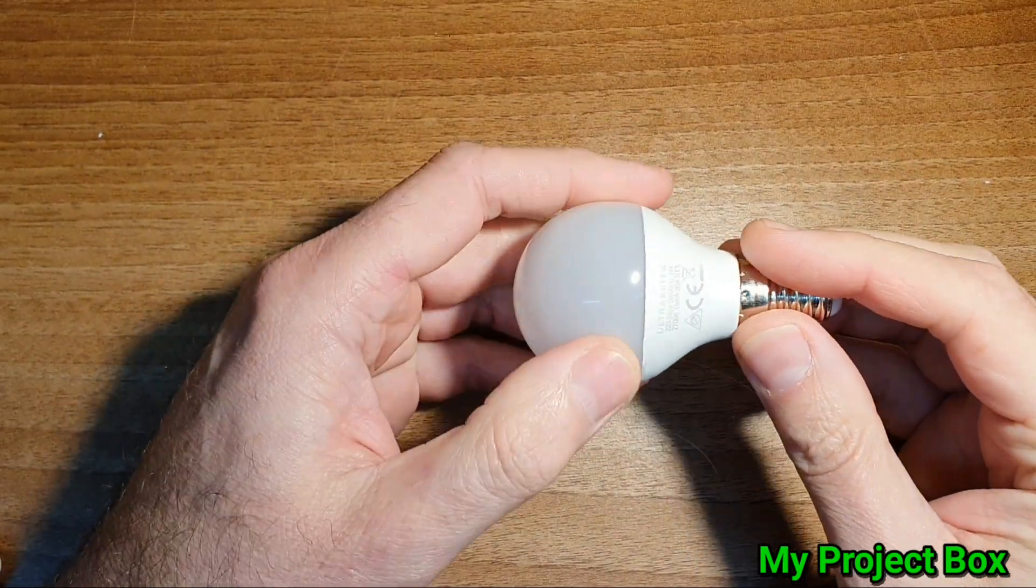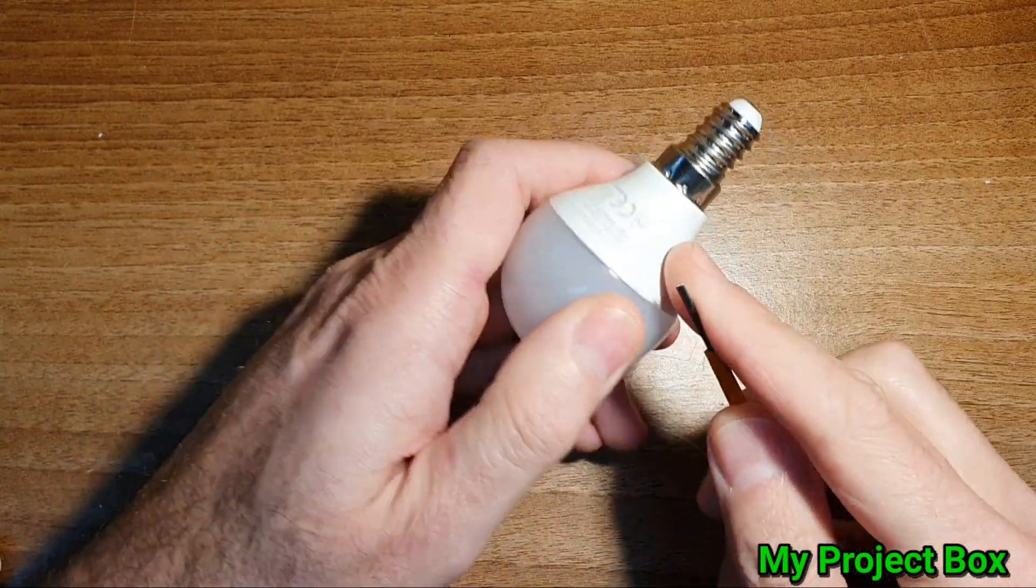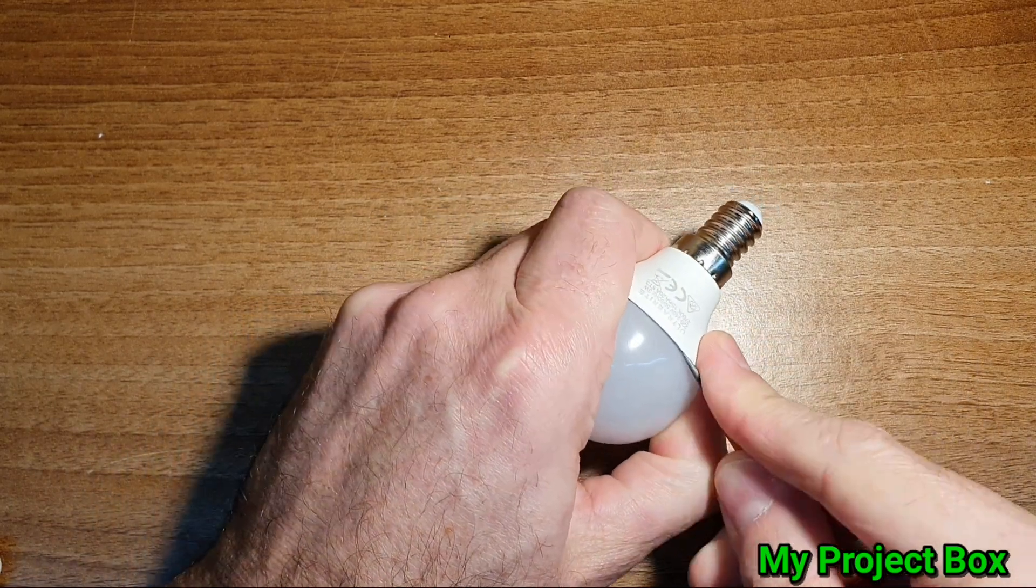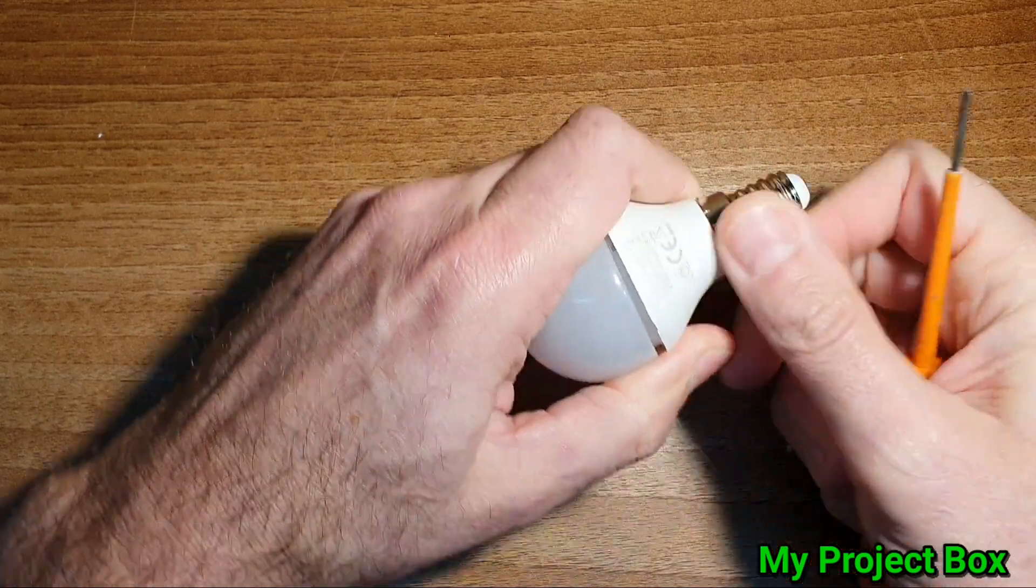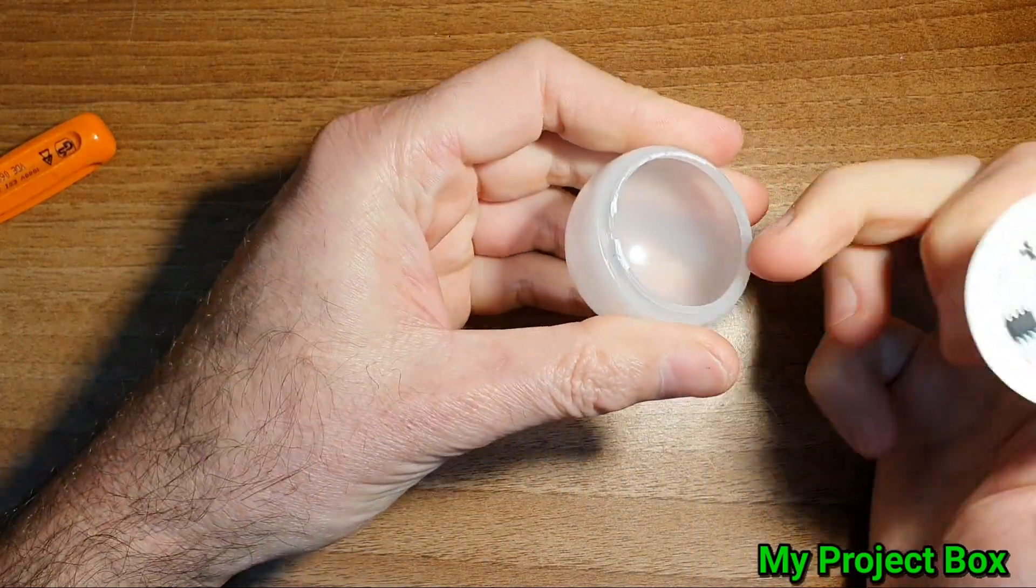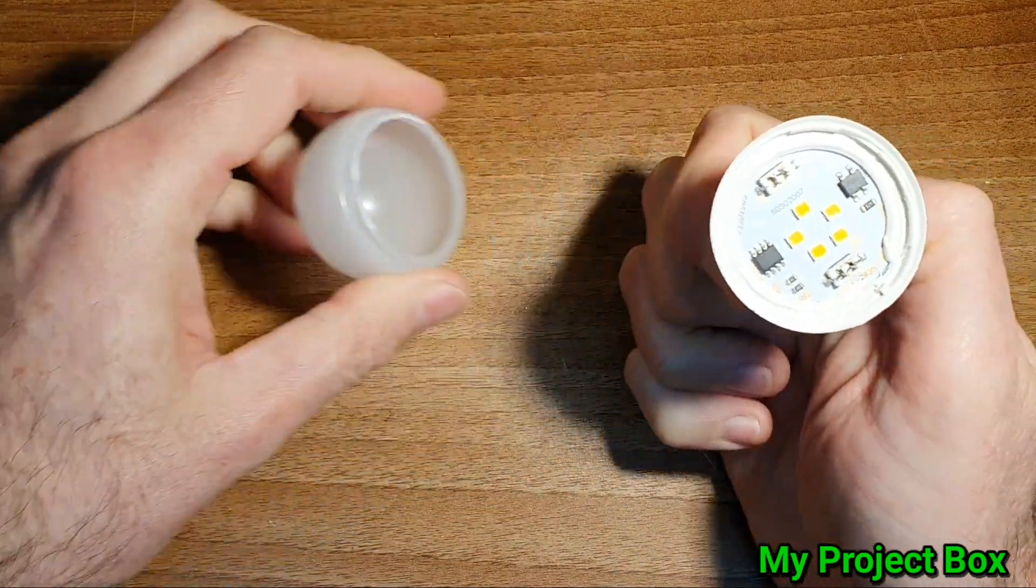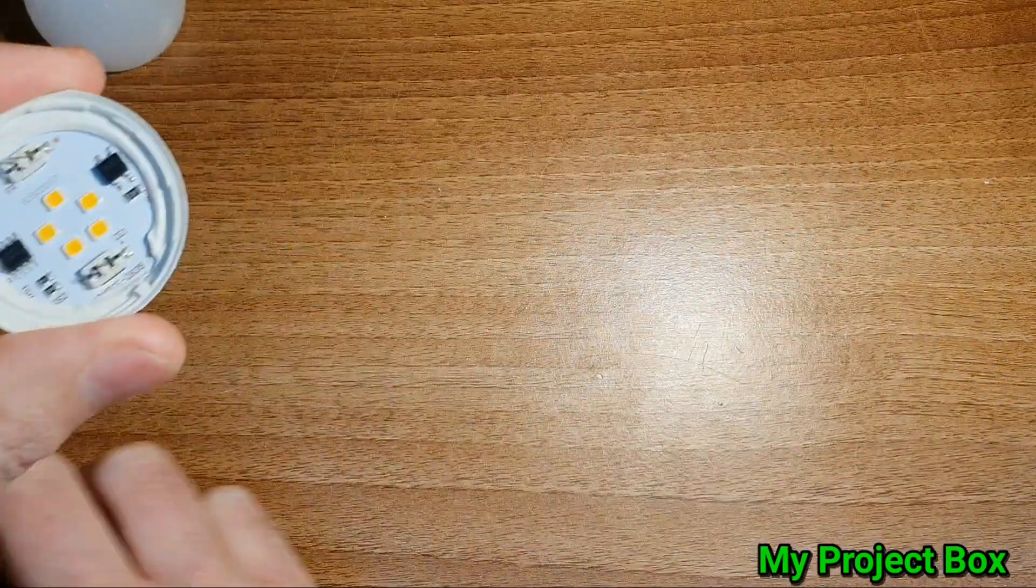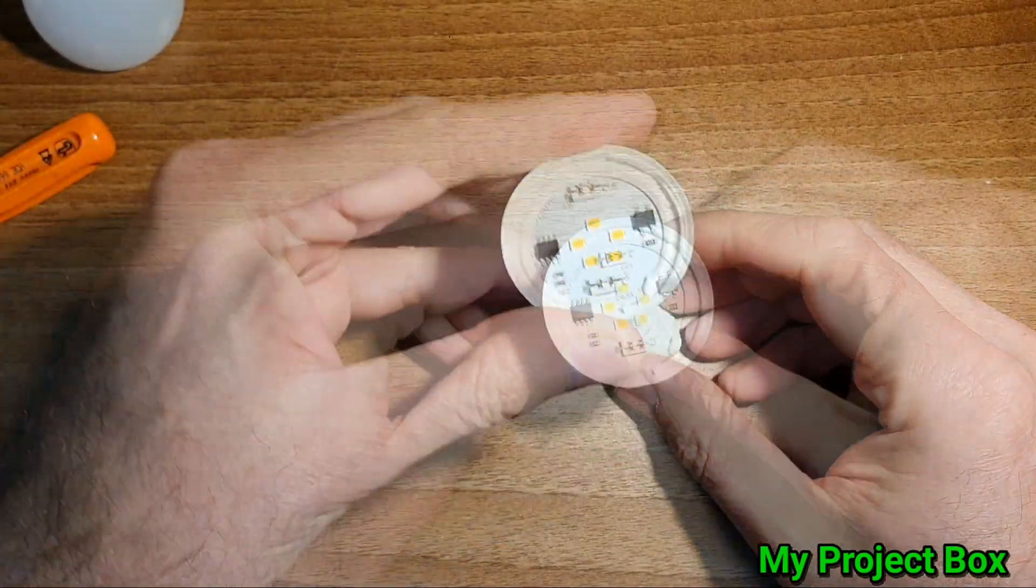So the first thing we need to do is crack it open. I think if we just slide along here we should just pop it open. It's just friction fit, though it's slightly glued in. Okay, so we just mount it here.